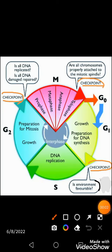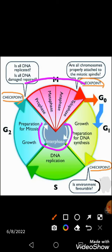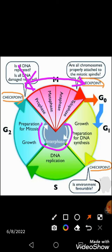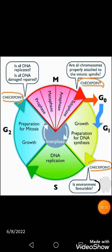After passing through the checkpoints and completing interphase — the biggest phase of the cell cycle — the cell enters the real activity time: mitosis. Mitosis has four phases: prophase, metaphase, anaphase, and telophase. These can be memorized using the abbreviation PMAT.